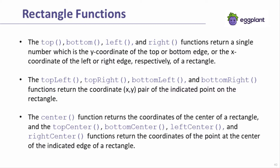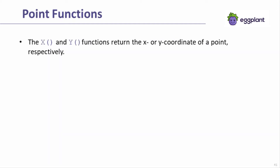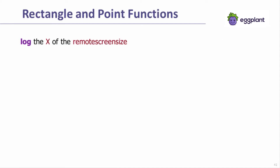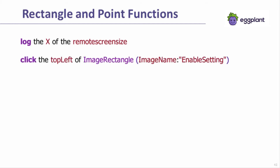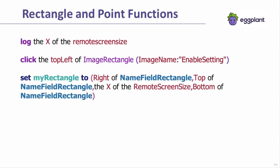The center function returns the point at the center of the rectangle. There are also the top center, bottom center, left center, and right center functions, which combine the X or Y coordinate of the specified edge of the rectangle with the X or Y coordinate of the center of the rectangle. The X and Y functions provide a method to easily reference the X and Y coordinates for a particular point, such as the point returned by the remote screen size function. Here are some examples of using the various rectangle and point functions. The first example shows how to extract the X coordinate from the remote screen size. The second example shows how to extract the top left corner of the image rectangle for a particular image search. The third example combines a few different rectangle and point functions to build a new rectangle based on a starting rectangle and the remote screen size.